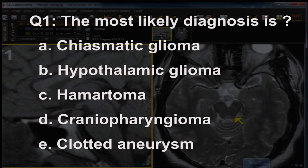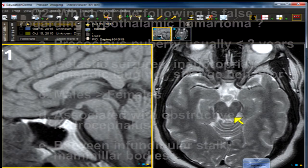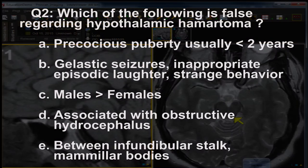...C) hamartoma, D) craniopharyngioma, E) clotted aneurysm. Question number two — spoiler alert, you will get the answer. You can pause if you wish. Which of the following is false regarding hypothalamic hamartoma?